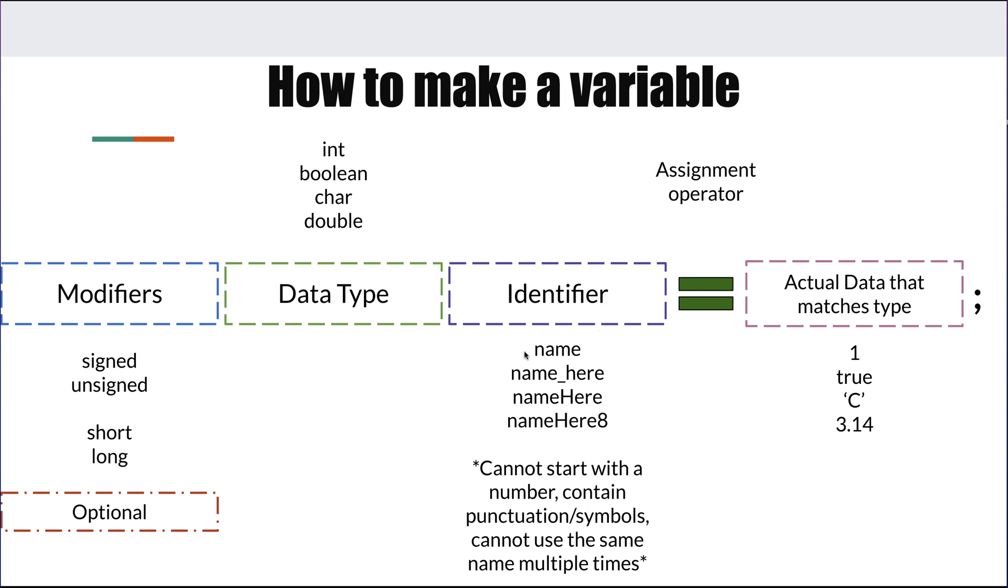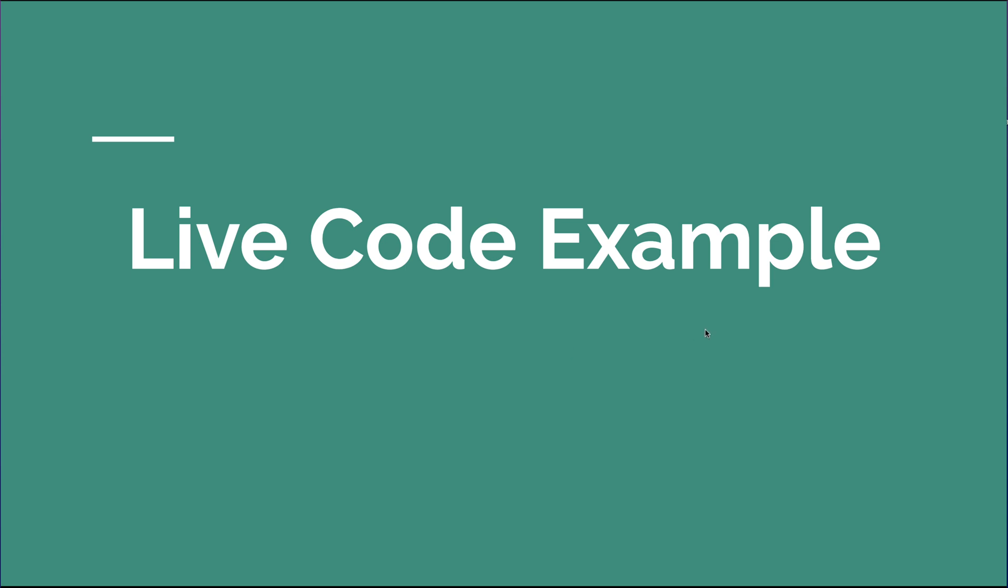And then you have your identifier, which is really just a name. You can see I've given some examples, we can put just the word name, we can put name underscore here, we could do camel case, which is name where we'd use a capital letter to separate, or we can put numbers at the end if we want. But there's a couple things we can't do when we give it a name or an identifier. We can't start with a number, it cannot contain punctuation symbols, and it cannot use the same name multiple times. So once I create a variable called name, I cannot redeclare something called name. And then we use the assignment operator, so we use an equal sign to assign a value to that identifier, which helps it create a space in memory and give it a name to find it. And that's where you just put your actual data after the assignment operator, a one, a true, a C, 3.14, those have to match the types that you declared.